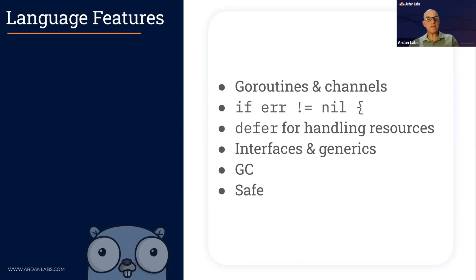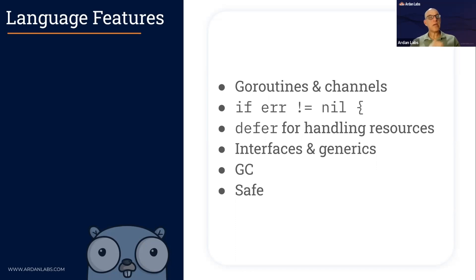Because of that, interfaces in Go are small — in the standard library the average interface is less than two methods. They're pretty unique and very useful. In Go 1.18 we got generics, so we can do things we couldn't do with interfaces alone, making code even more reusable. For example, HashiCorp has a cache with specific types of keys and values — you can now write generic data structures like that.